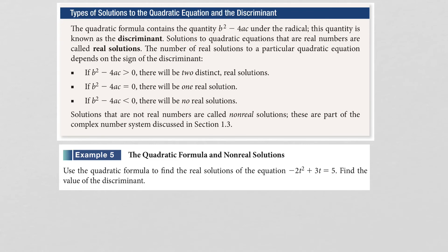We can also use the part of the quadratic formula under the square root sign — the b squared minus 4ac expression — which is called the discriminant, to determine the types of solutions. If b squared minus 4ac is positive, we have two distinct real solutions. If it equals 0, the square root is 0 and we get one real solution. If the discriminant is negative, we have no real solutions, because we'd be taking the square root of a negative number, yielding complex numbers.